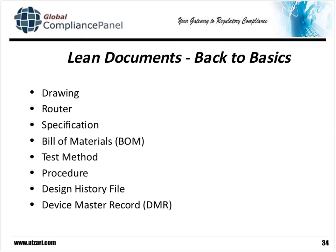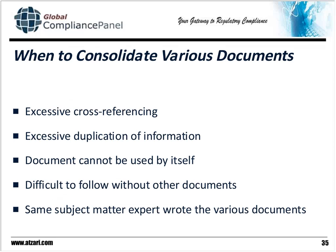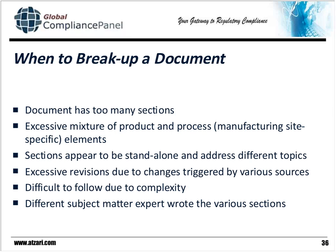Lean documents is really getting back to basics. It's looking at the original intent of each of these documents and getting rid of anything that isn't part of that intent. If you have many documents pointing to each other and repeating the same information, and none of them can be used by themselves, that's a sign that the documents can be compiled together, especially when you have the same expert that wrote these documents. Conversely, if the document has too many sections, it's difficult to follow each section, it covers a totally different topic, and it's very complex — that may be a sign it's time to break up that document.